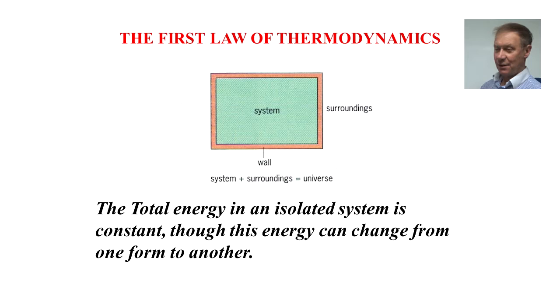So the First Law of Thermodynamics states that the total energy in an isolated system is constant, although the energy can change from one form to another. What you see in the diagram, the system is an isolated area covered by the surroundings with a wall. System plus surroundings equals universe.